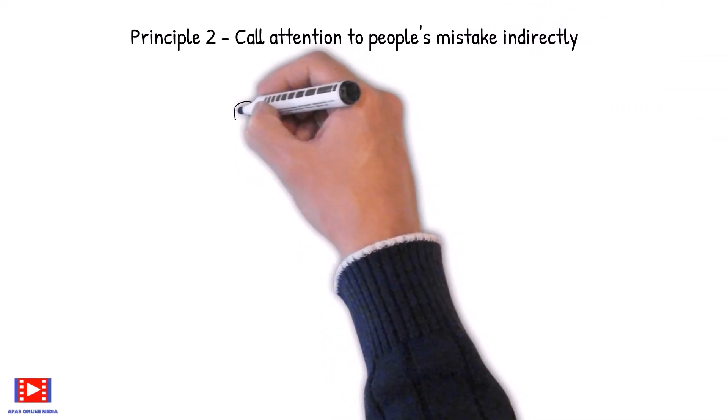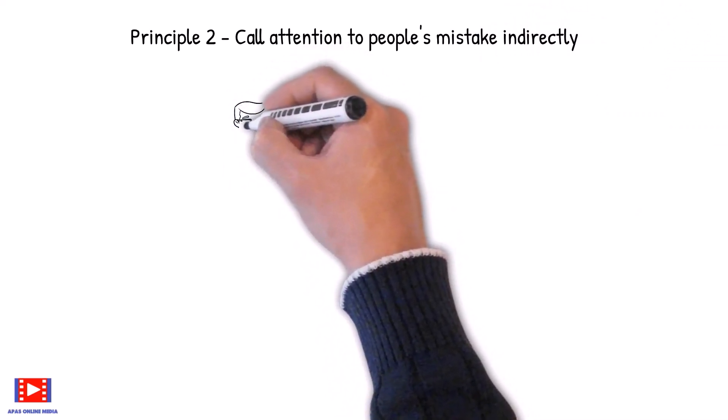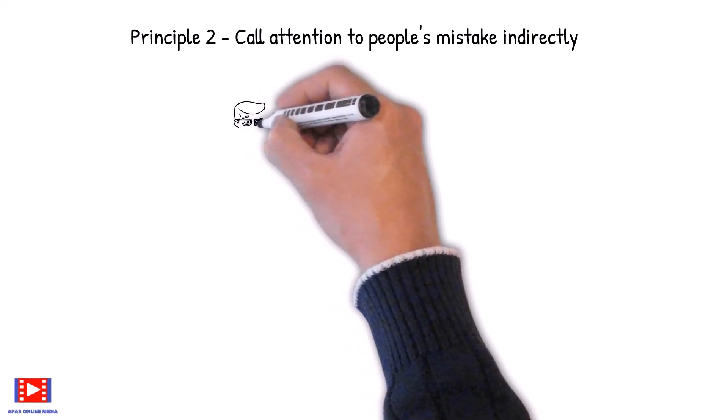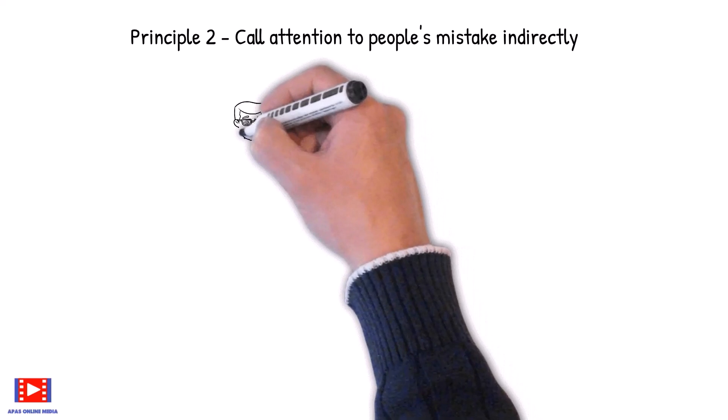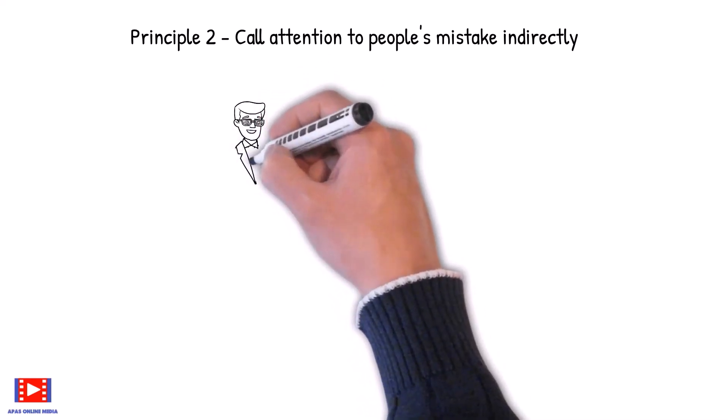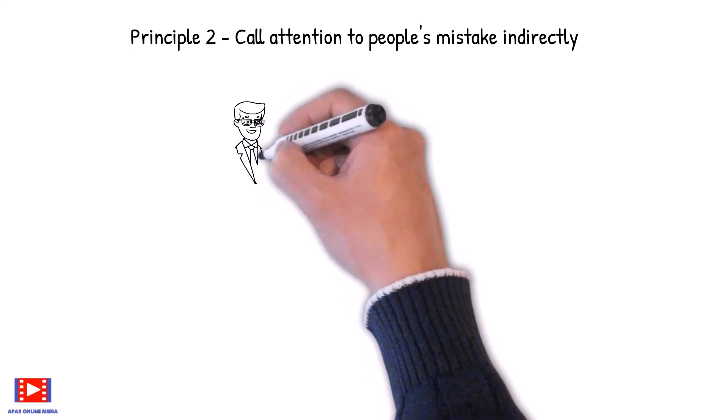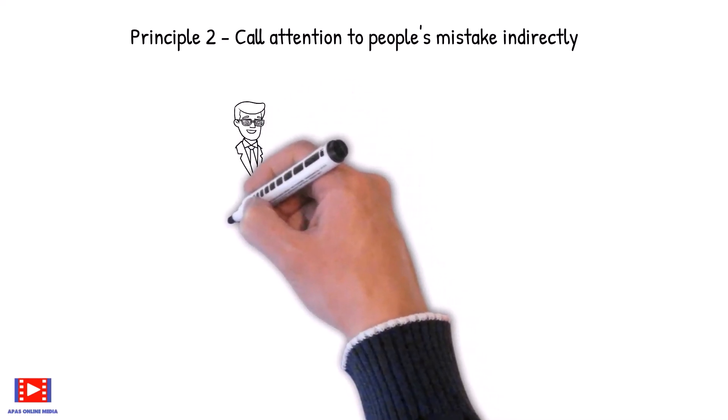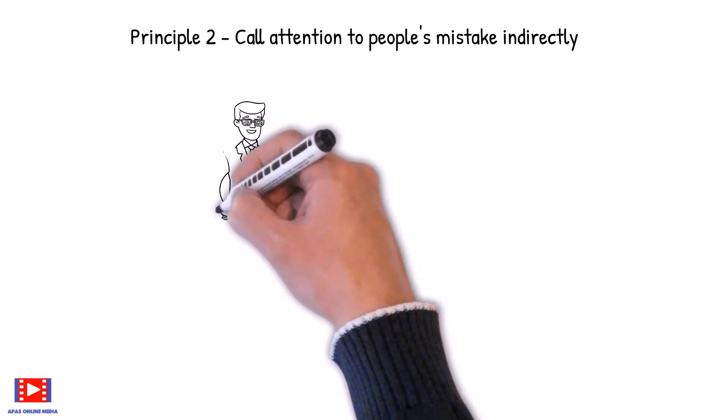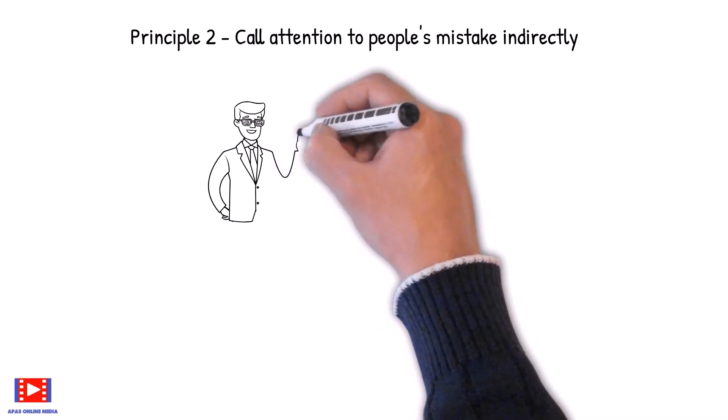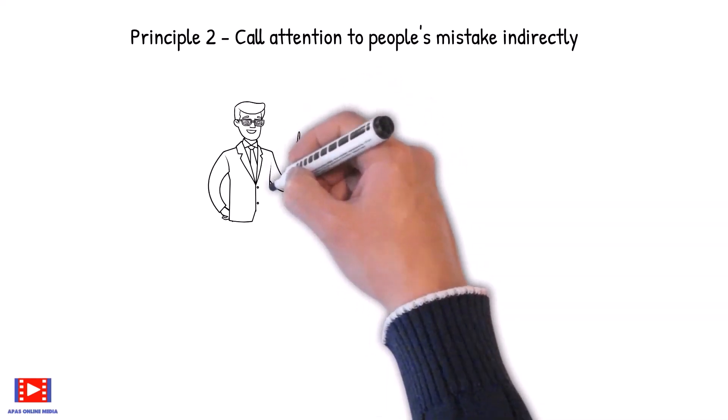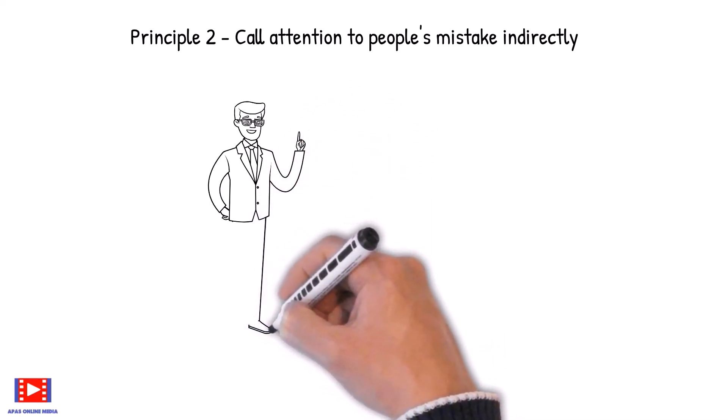Principle 2: Call attention to people's mistakes indirectly. Calling attention to one's mistakes indirectly works wonders with sensitive people who may resent bitterly any direct criticism.